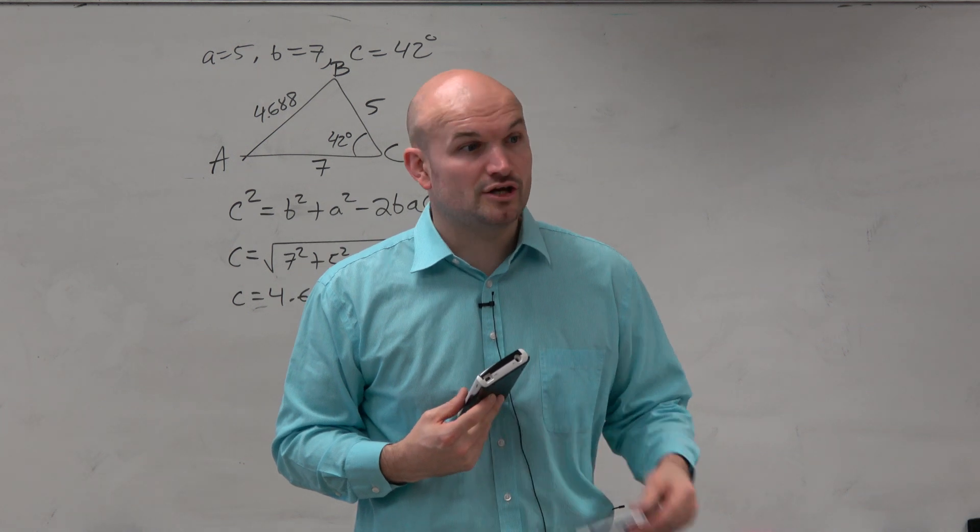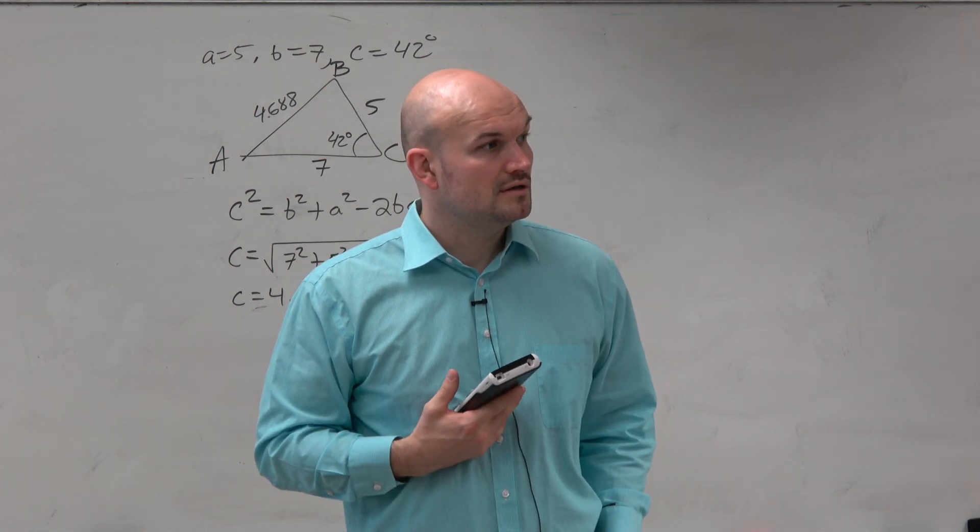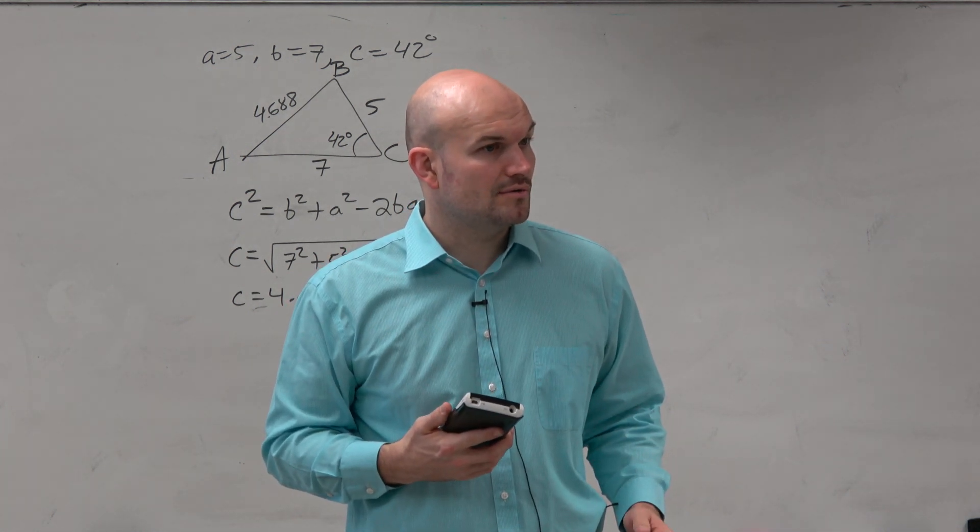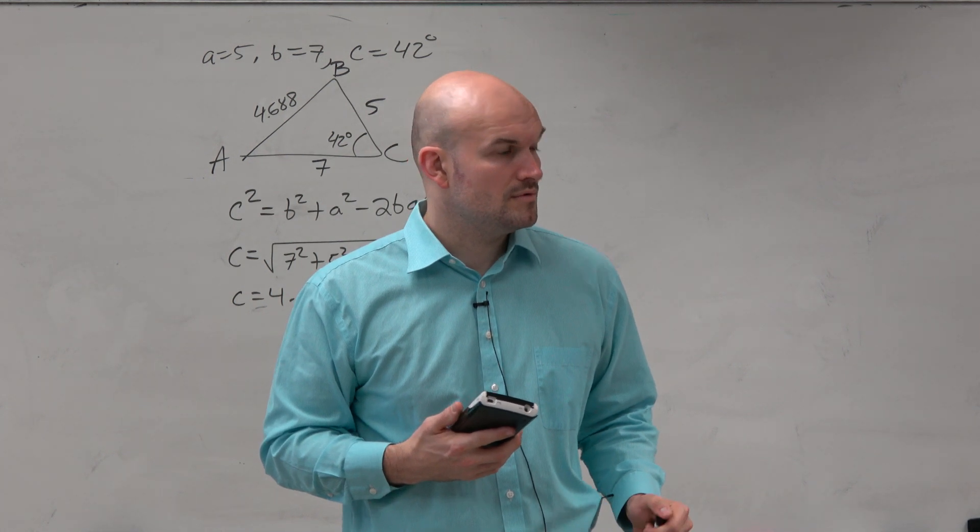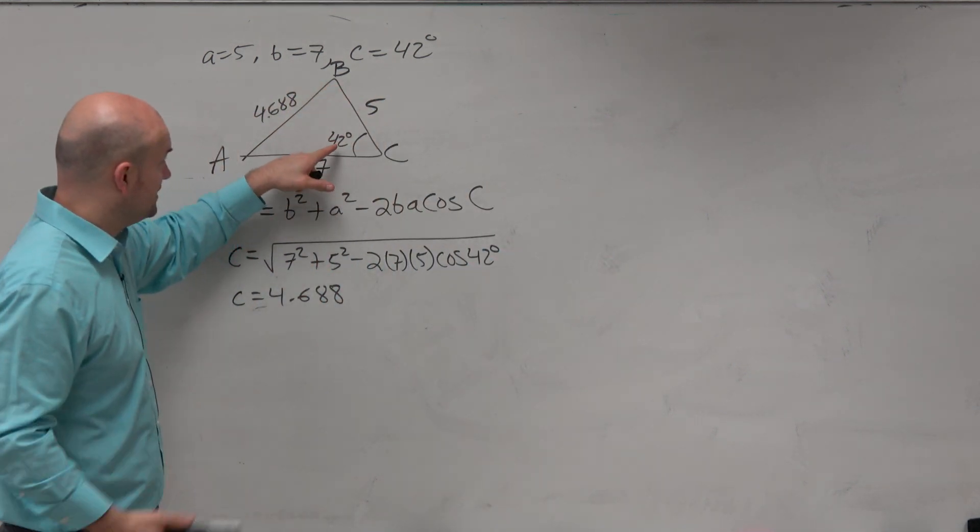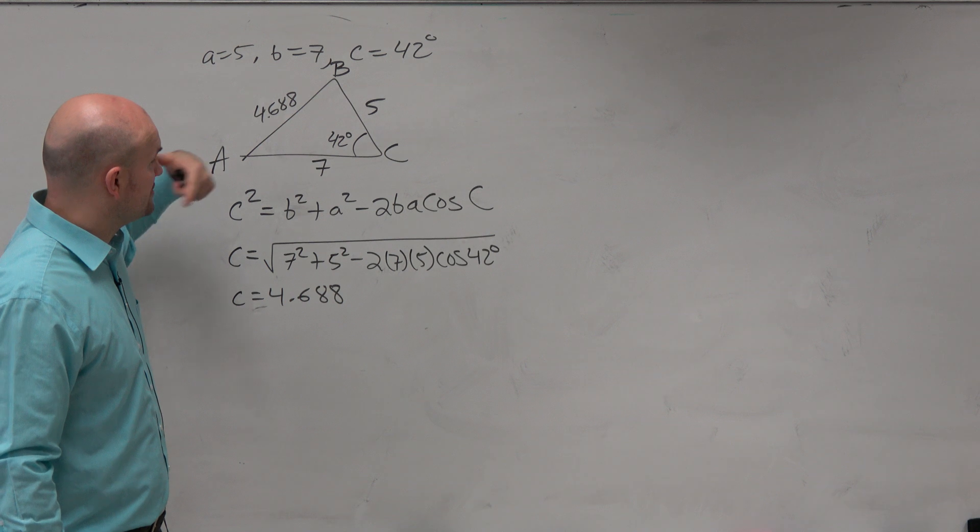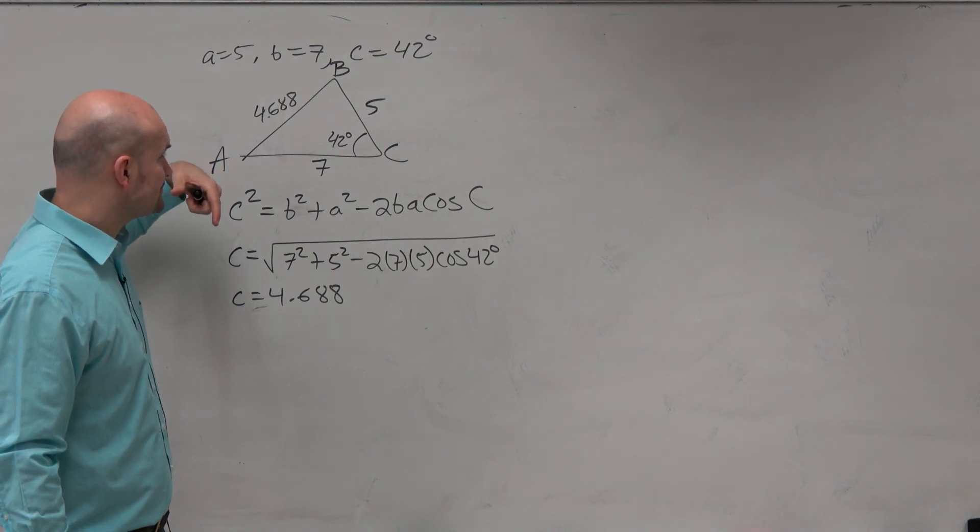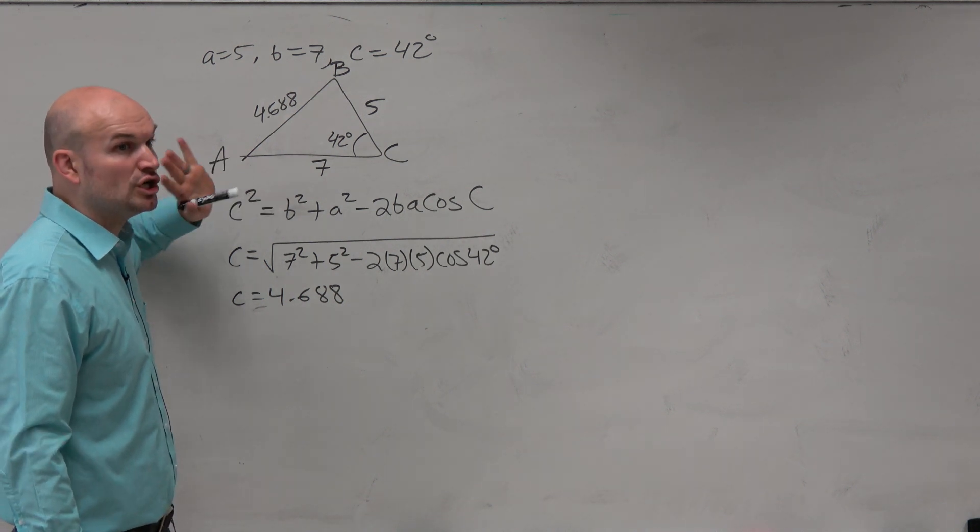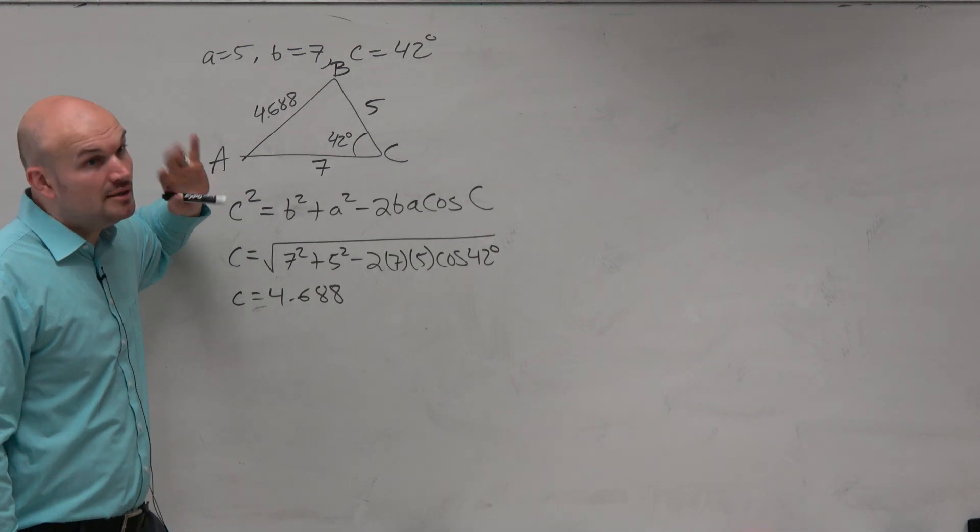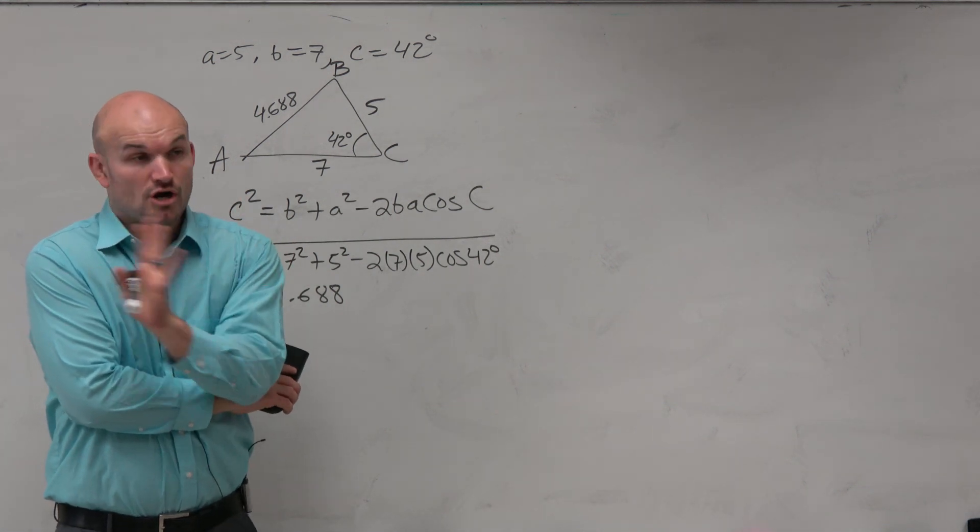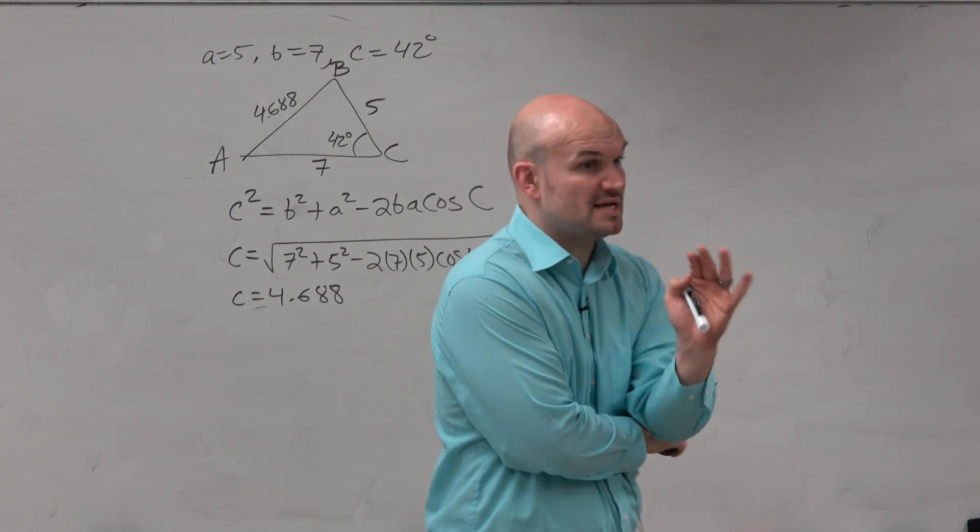All right. Now comes the good question. Should I go to the law of, could I use the law of sines here? Yes. So we have angle C. So if we're going to use the law of, if we're going to go through finding an angle, are we sure that there's not going to be the ambiguous case? Because remember, law of sines only gives you an acute angle.